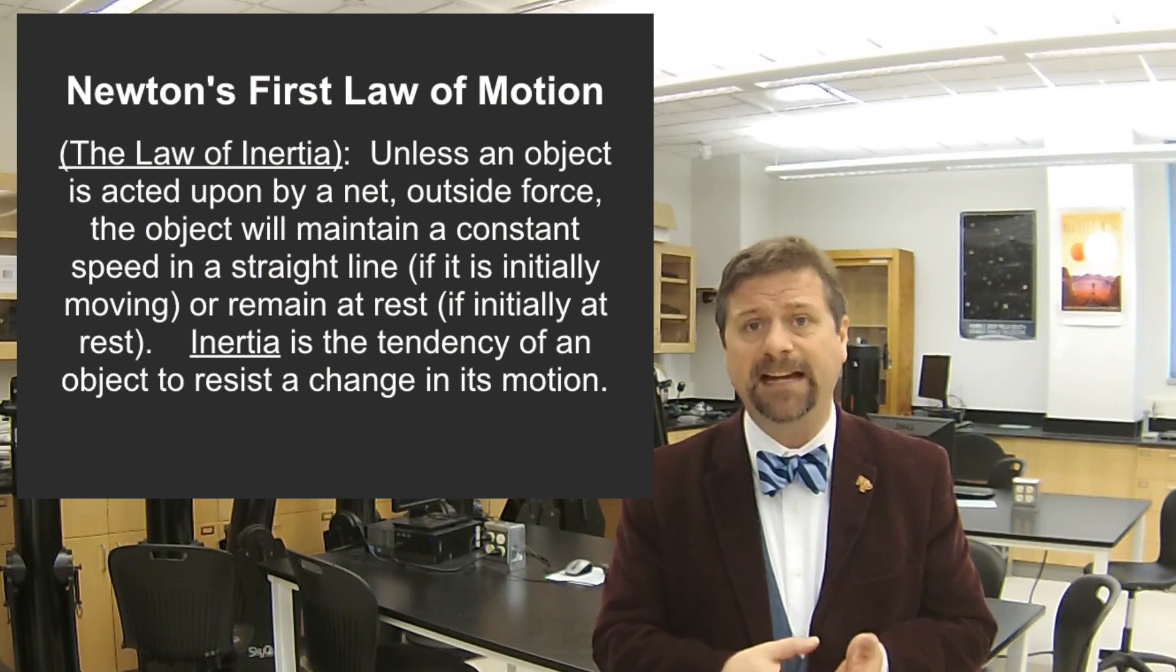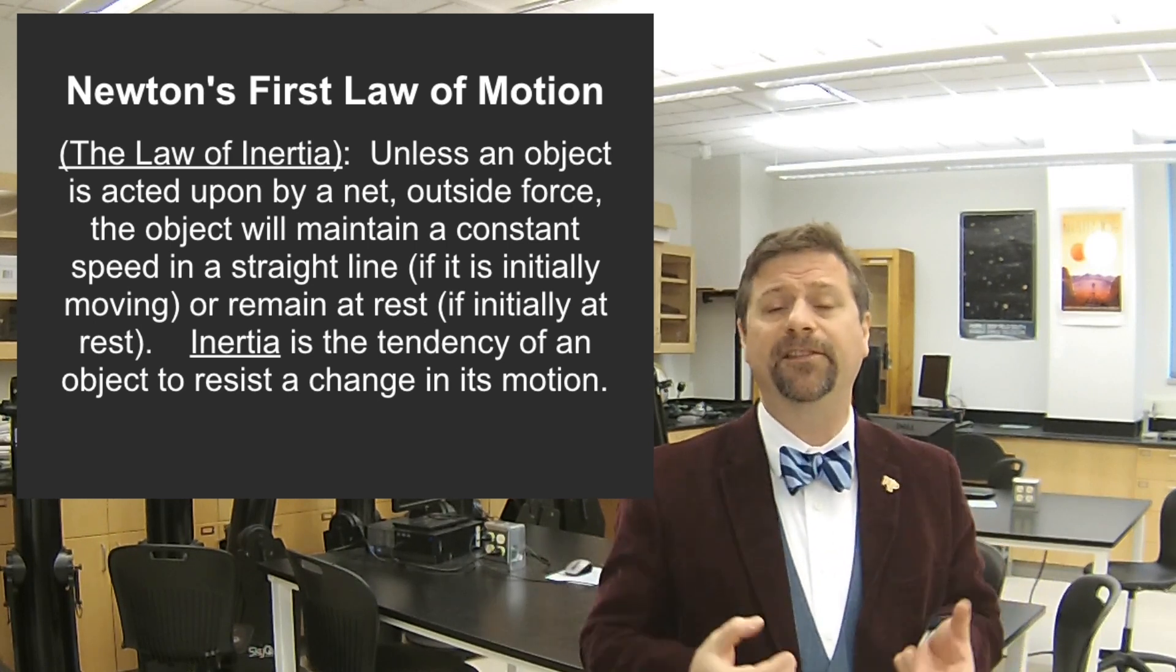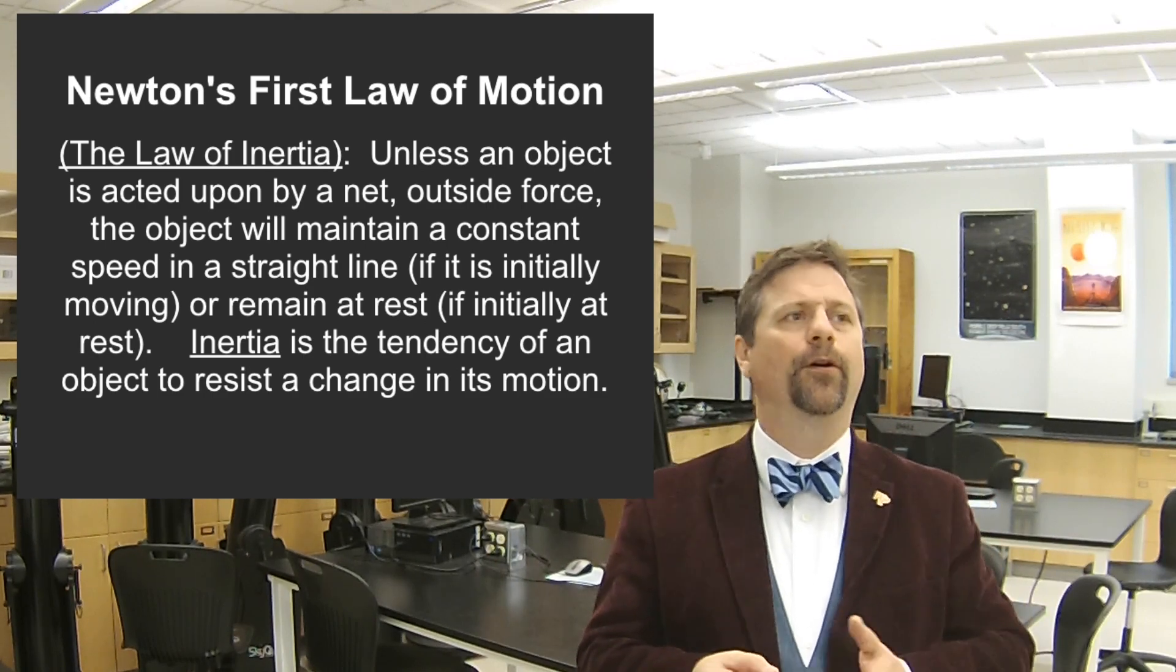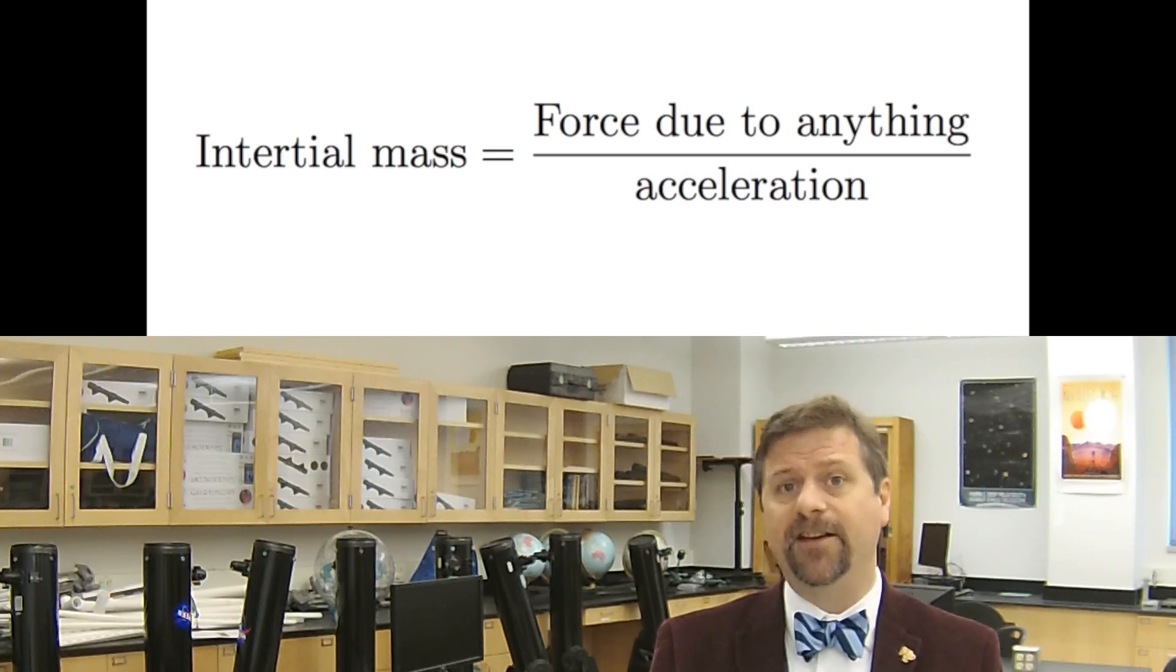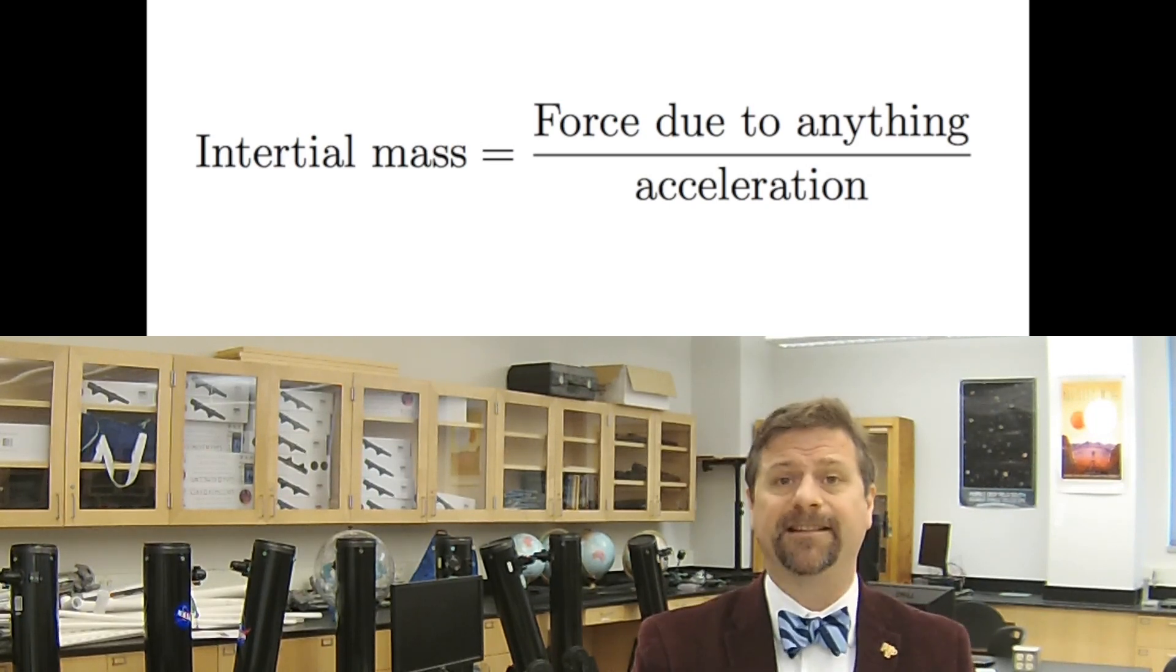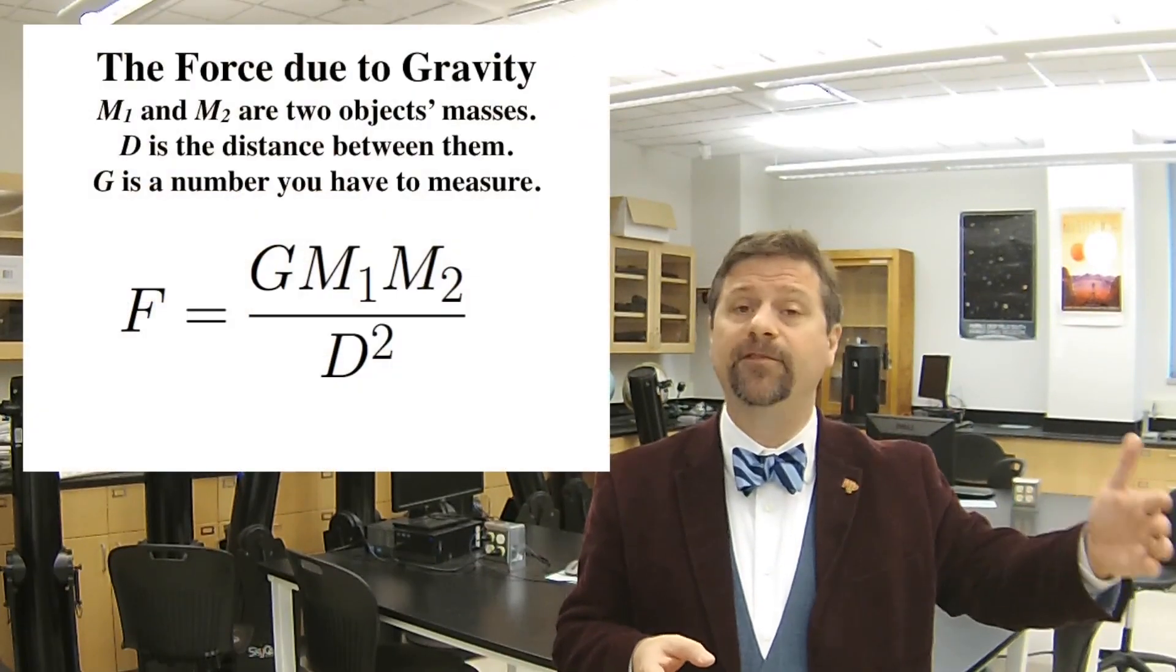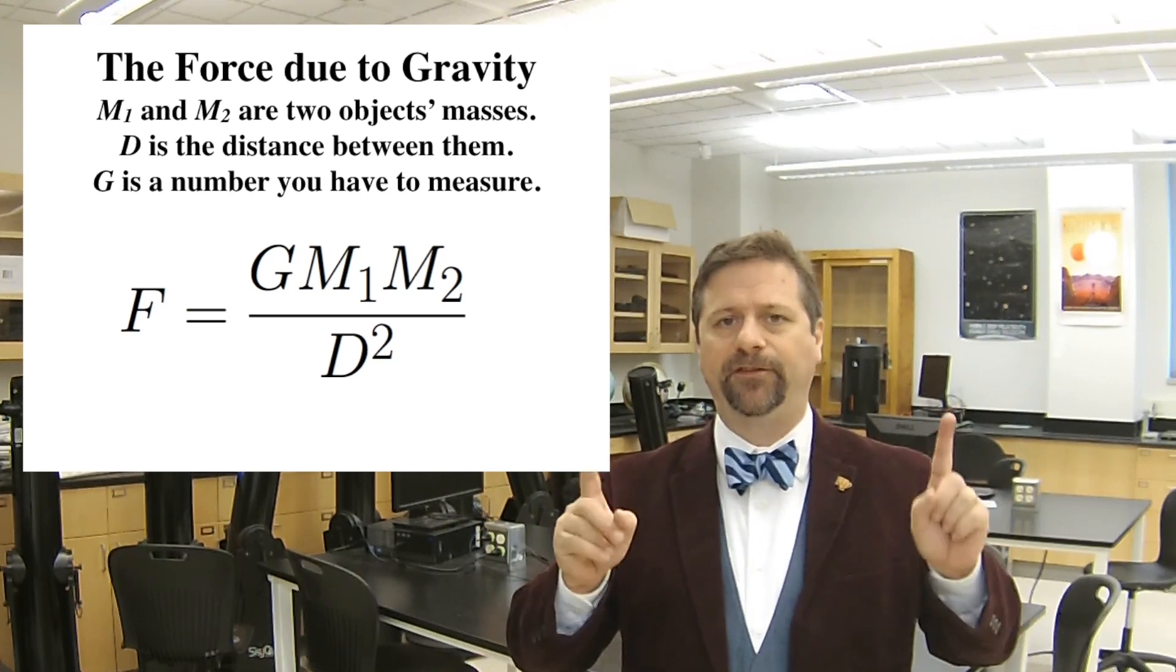Newton taught us that the force due to gravity is proportional to the two masses that are gravitating with respect to each other, divided by their distance squared. Here's the interesting thing: Newtonian physics says that for any force, if you apply it to a mass, it accelerates. The resistance to that acceleration is what we call its inertial mass.